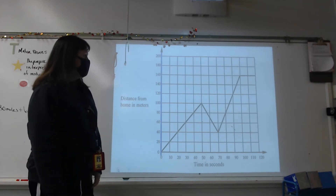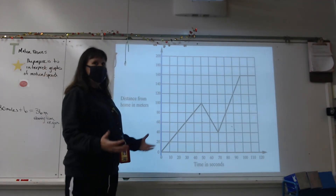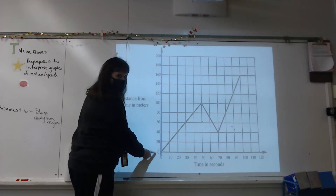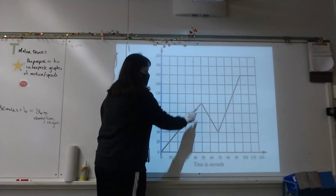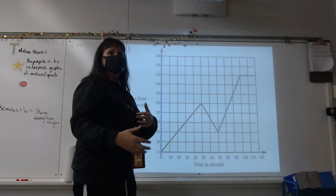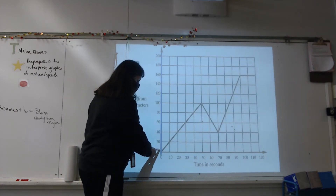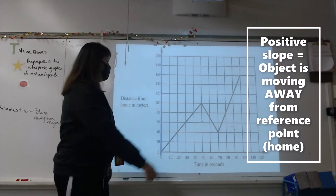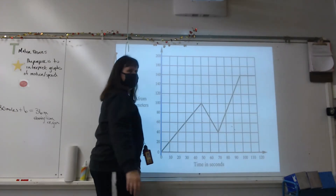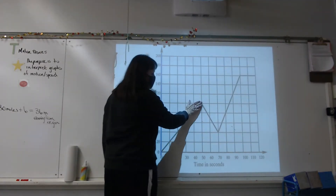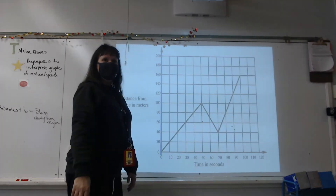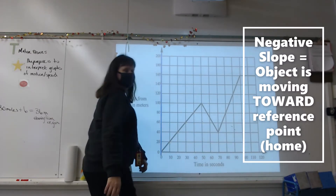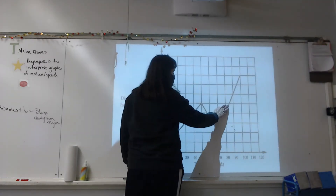It's fun because we can also see direction on a graph. Starting at home, if the graph goes up like this, I'm not climbing a mountain — I'm actually just moving away from where I started. When the line comes back down, I've changed direction and I'm heading back towards my house.